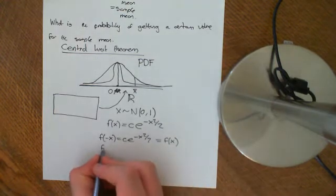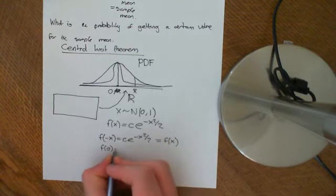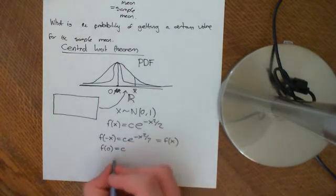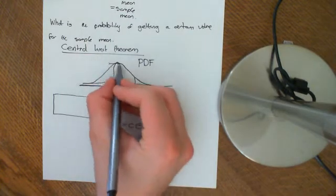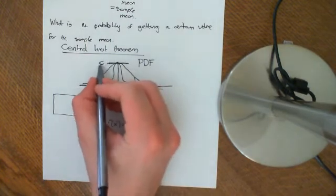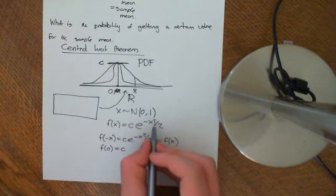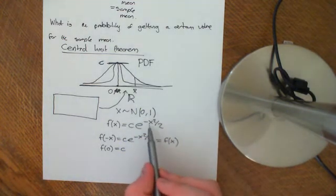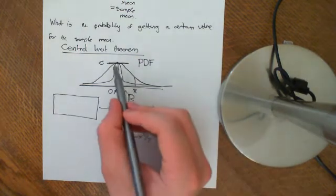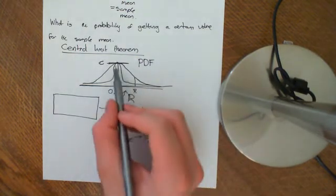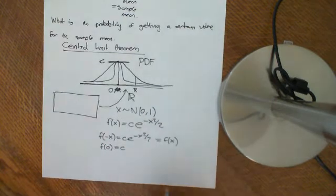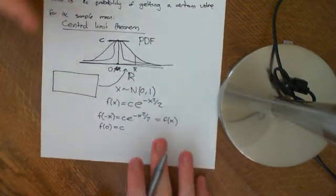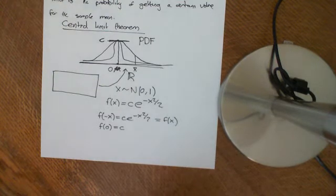If we put in f of 0, then we get that it's equal to c e to the 0, which is 1. So, we get that it's equal to c. So, the height of this distribution is going to be c. And we can see that as x gets bigger and bigger and bigger, you're going to be taking the exponential, the negative exponential of a bigger and bigger number. So, it's going to get smaller and smaller and smaller. So, we can see that it's going to drop off from either side. So, we can see that it looks something like a bell-shaped curve.